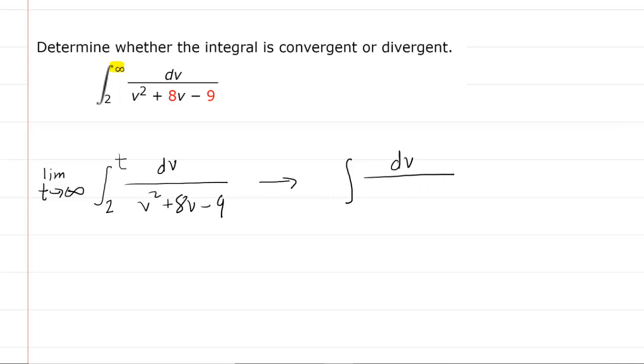Now, in this case, we have the denominator as v squared plus 8v minus 9, we actually want to factor that expression. This will make the integration a little bit easier.